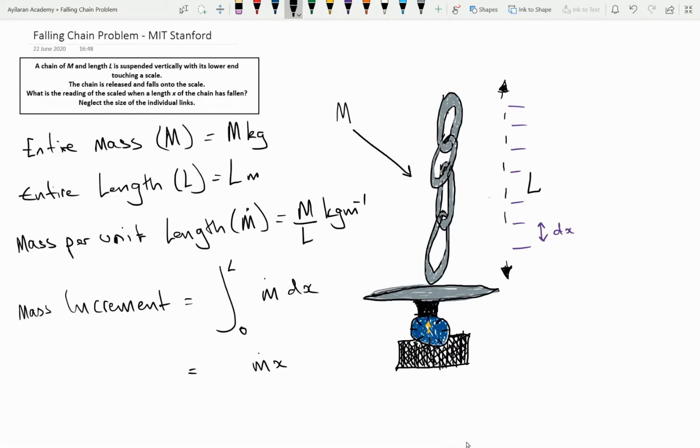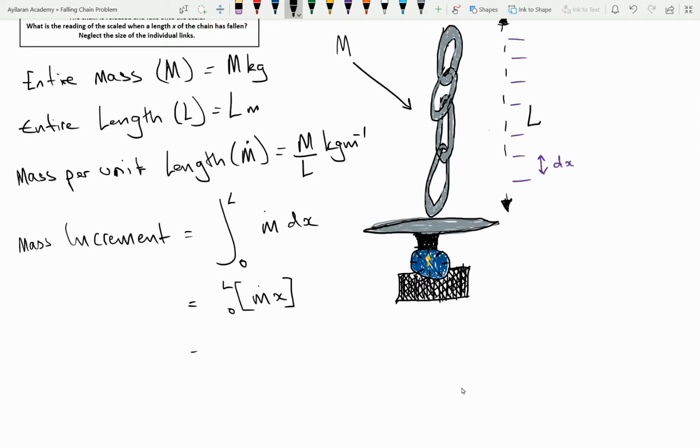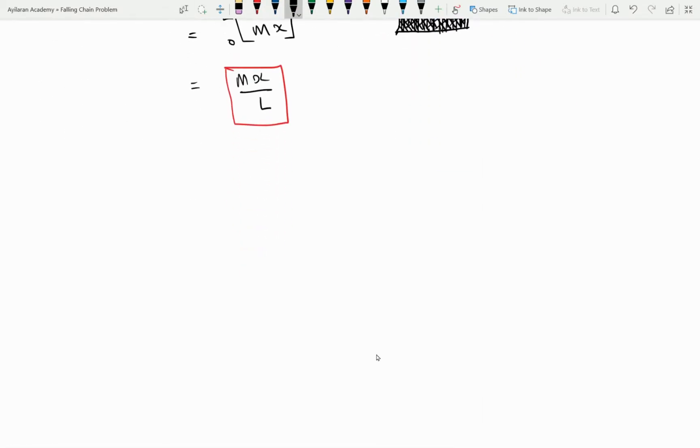When we integrate this expression M dot X with respect to DX between the limits 0 where we have not moved anywhere along the chain and L where we have moved along the full length of the chain we get the final expression MX over L as the mass of our chain. Note that X and L have the units of meters so X divided by L cancel effectively and you're left with simply the mass in kilograms of the entire chain.